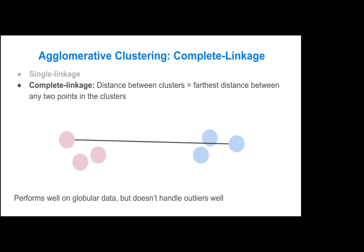You also have complete linkage, which is where the distance between two clusters is equivalent to the farthest distance between any two points in the clusters. This performs well when you have clusters that are pretty distinctly separated and are also relatively similarly shaped, but it does not handle outliers well if you have points that are very far out. This one is also similarly fast to single linkage.